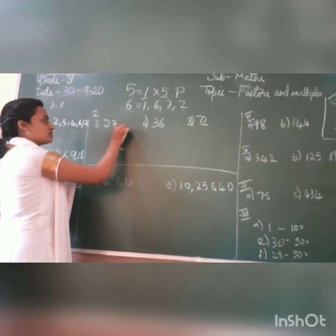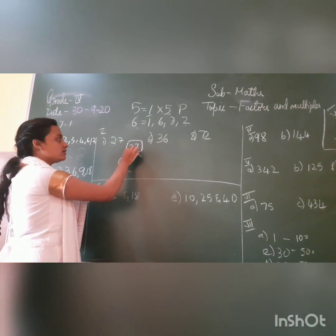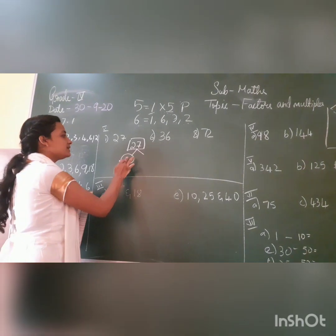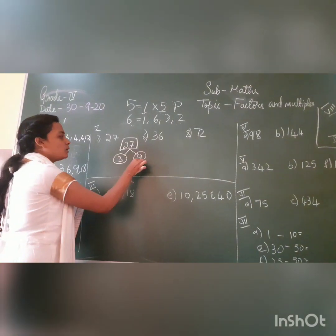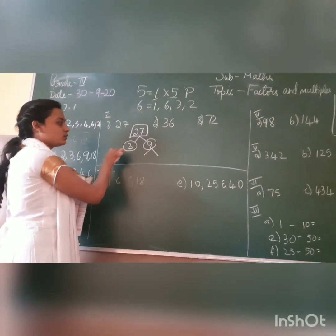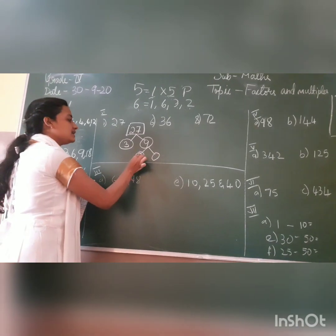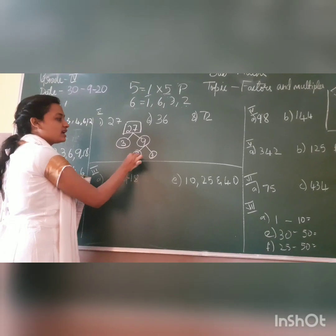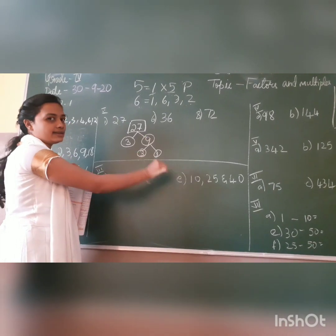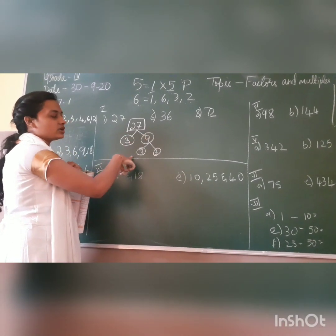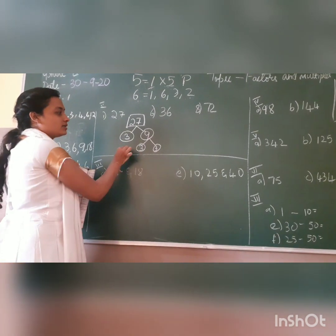Let me take the first number. I should check: will 27 divide by 2? No. So let me take 3: 3 × 9 = 27. Now I divide 9 again: 3 × 3 = 9. I got the same prime number and I cannot divide it further. So the prime factors of 27 obtained by the factor tree method are 3, 3, and 3.